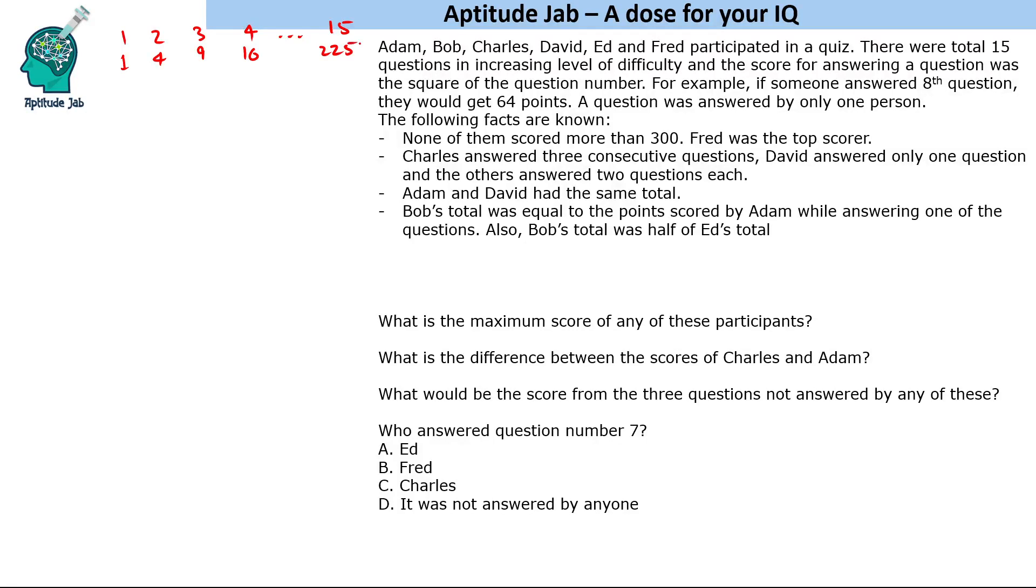Some facts are given: none of them scored more than 300, Fred was the top scorer, Charles answered three consecutive questions, David answered only one question, and the rest of them answered two questions each.